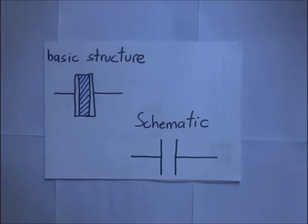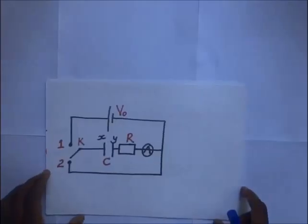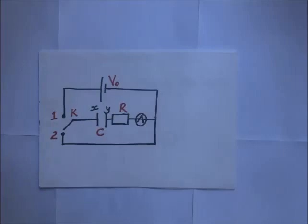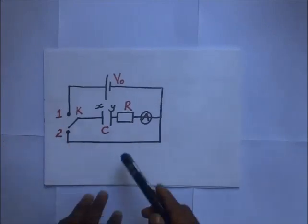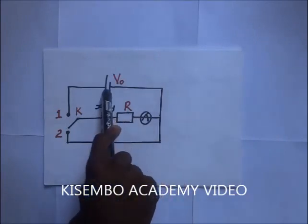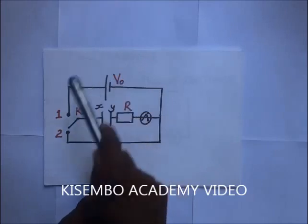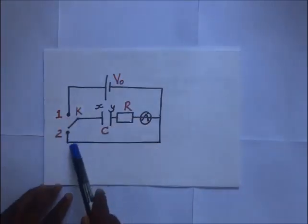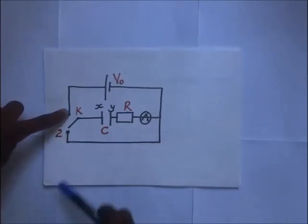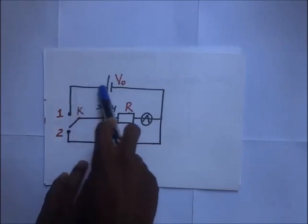Let's look at how we charge this capacitor. Here we have a diagram that will form the basis for our explanations on how we charge and discharge a capacitor. In this circuit we have a resistor, an ammeter, the capacitor, and a source of voltage labeled V₀. We have a switch key that can be connected to terminal one or terminal two.